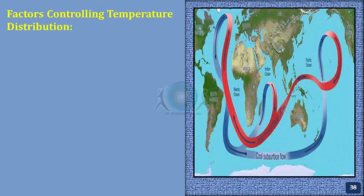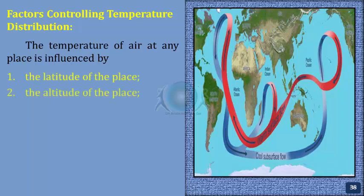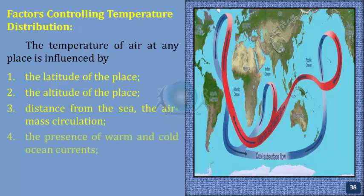Factors Controlling Temperature Distribution. The temperature of air at any place is influenced by the latitude of the place, the altitude of the place, the distance from the sea, the air mass circulation, the presence of warm and cold ocean currents, and local aspects.